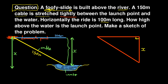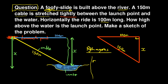We want to find x. We've been given that the cable (hypotenuse) is 150 meters and the horizontal distance is 100 meters. Because this is a right-angle triangle, we're going to use the Theorem of Pythagoras. Pythagoras states: r² = x² + y², where r is the longest side. So: 150² = x² + 100².